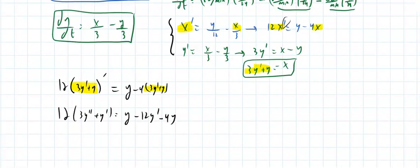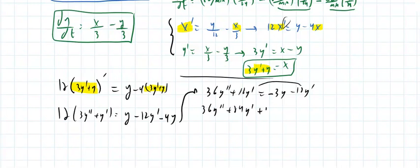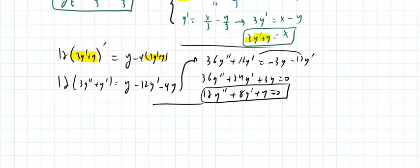That's 36y double prime plus 12y prime equals negative 12y prime minus 3y. So 36y double prime plus 24y prime plus 3y equals zero. Divide by 3: 12y double prime plus 8y prime plus y equals zero. This is a second-order linear differential equation with constant coefficients.